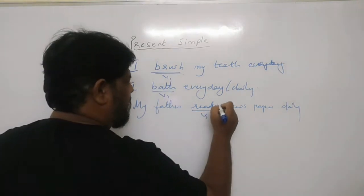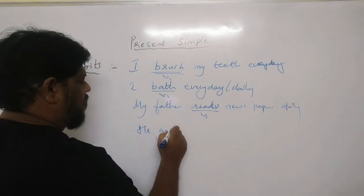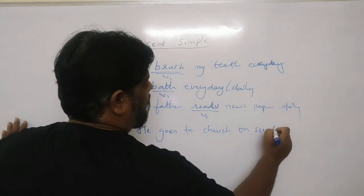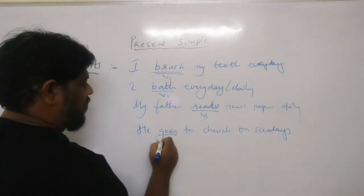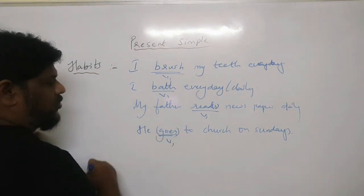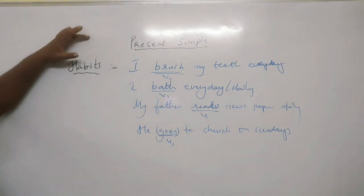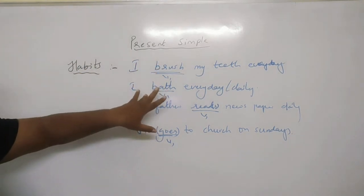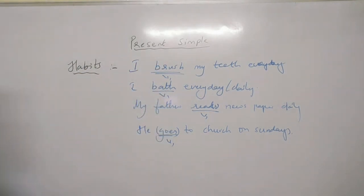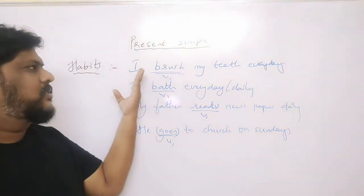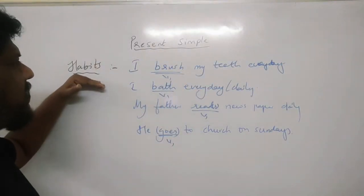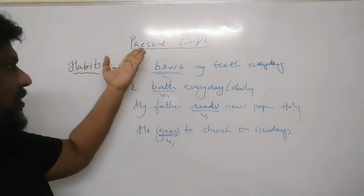Here also we have used the S form: 'He goes to church on Sundays.' So present simple basically tells about habits — what you regularly do. You can tell all those habits in present simple. If a question is asked like 'what were you doing yesterday at seven o'clock,' you say 'I was brushing my teeth at seven o'clock.' But for habits alone, you use only V1 in the present simple tense.